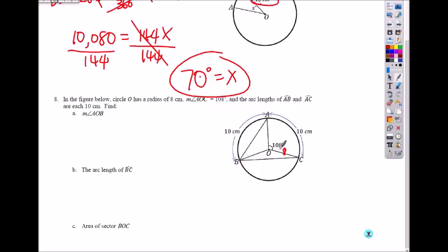AOC right here is 108. And the arc length of AB and AC is 10. That means this is also 108, right? Because the arc length corresponds to the central angle. And if they have the same arc length, that means they have the same triangles.